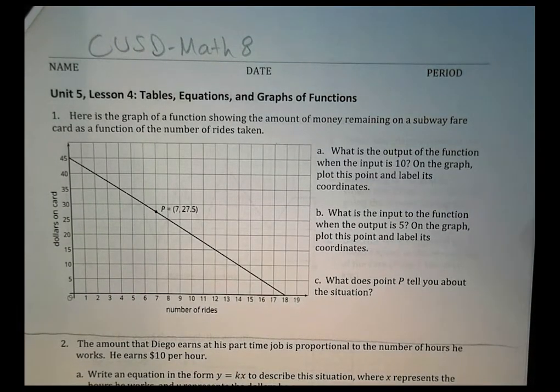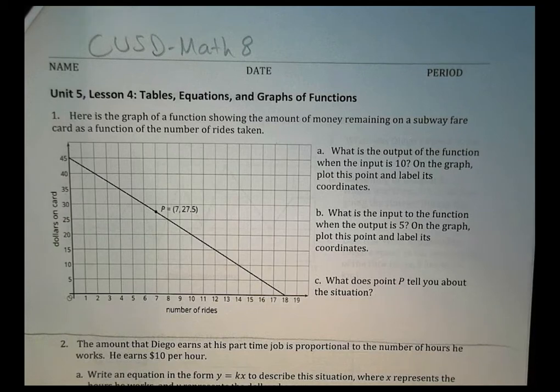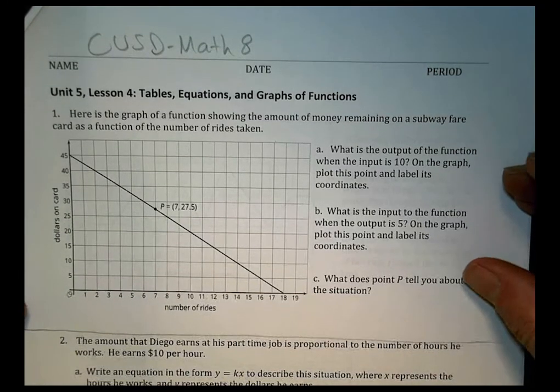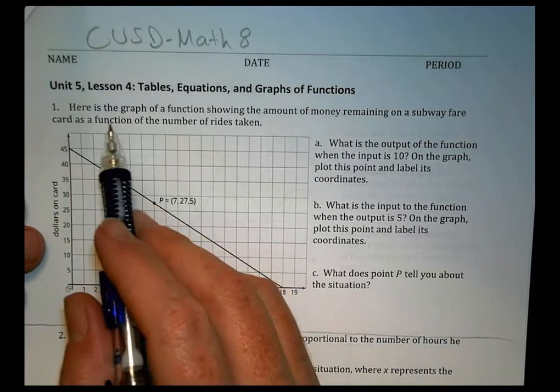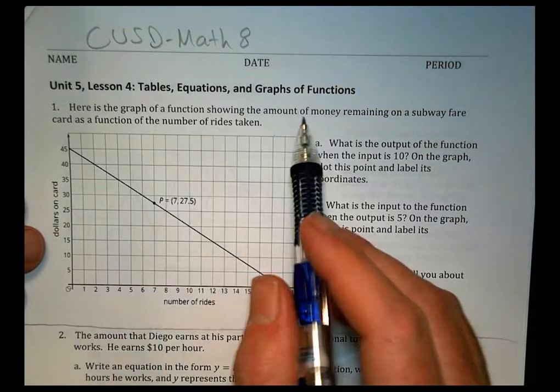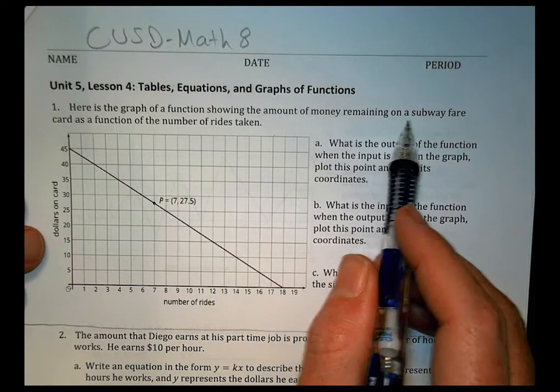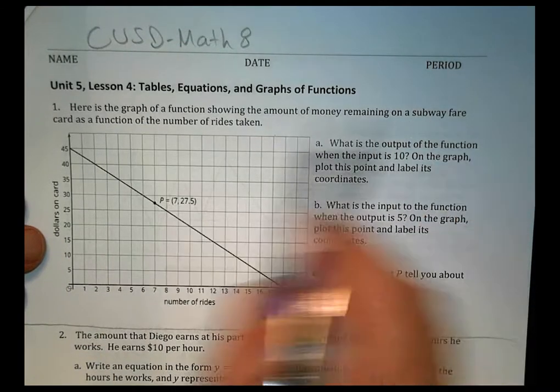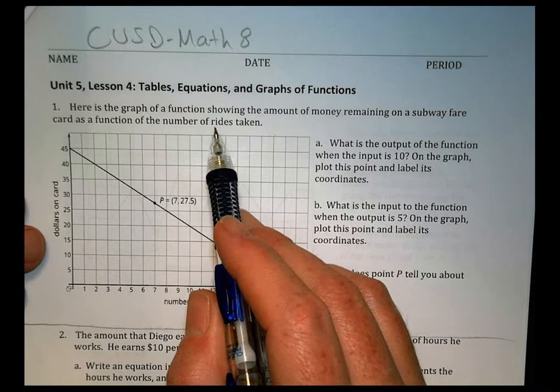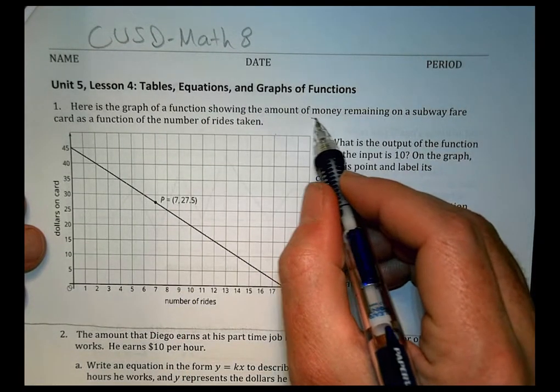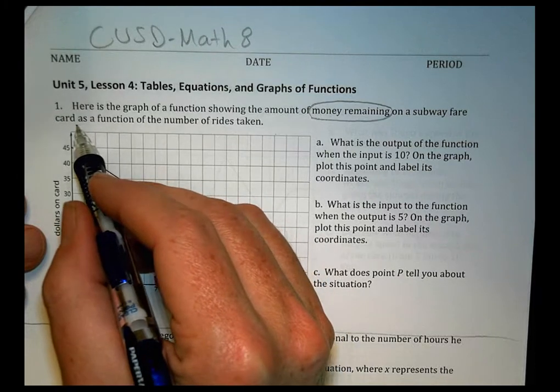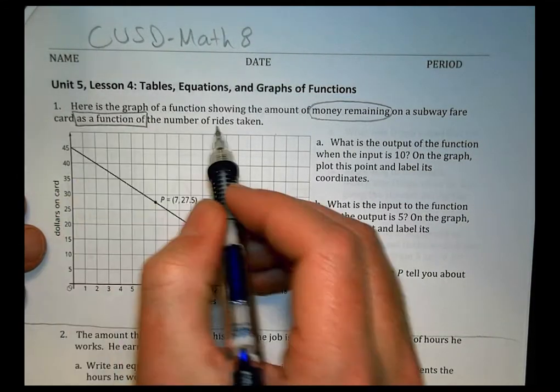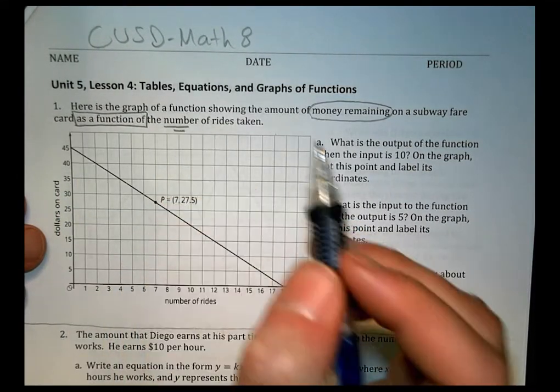So I won't do all of it, but this one here is one I can't change the numbers on too much. I'm going to talk through it with you to help you understand what to do. Because sometimes we get tricked up on the words. What are they asking you to do? So it says, here is the graph of a function showing the amount of money remaining on a subway fare card as a function of the number of rides taken.